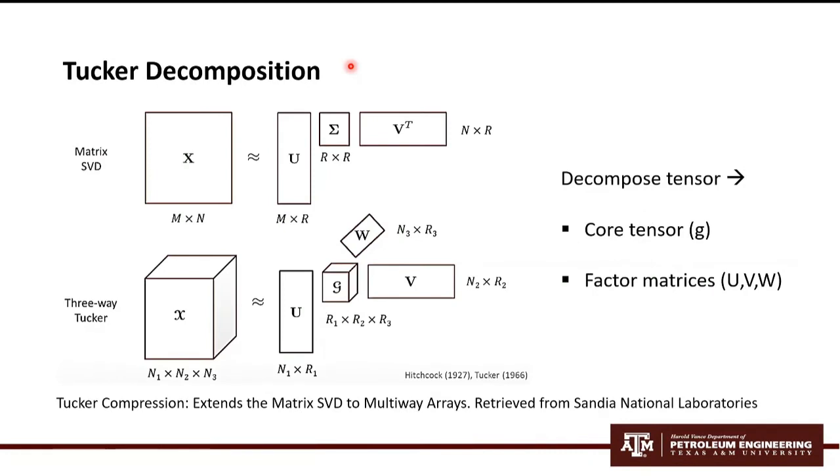Now we're going to explain Tucker decomposition. Tucker decomposition is essentially a higher order extension of SVD where we find the best rank approximation. We decompose a tensor into a so-called core tensor. This core tensor can be described as a dense tensor of interactions between factor matrices and factor matrices U, V, and W. Each one corresponds to different core scalings along each mode. This is a figure of the three-way Tucker and the matrix SVD to observe the similitude between them.